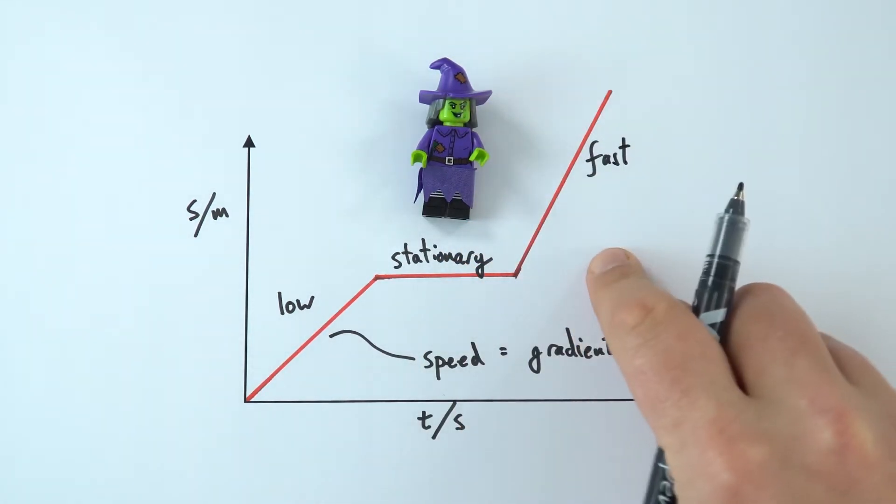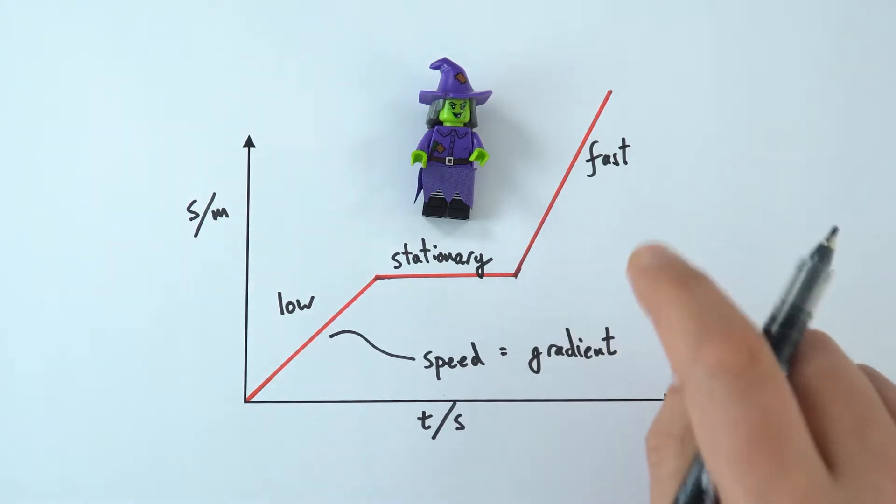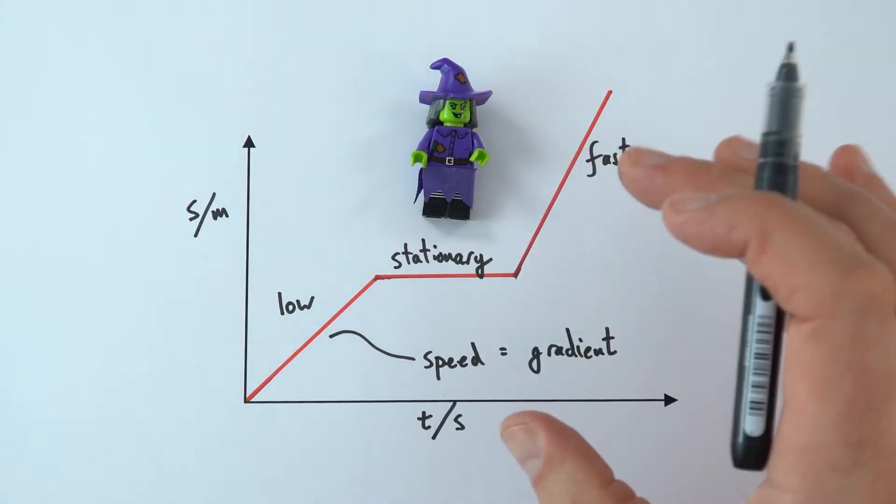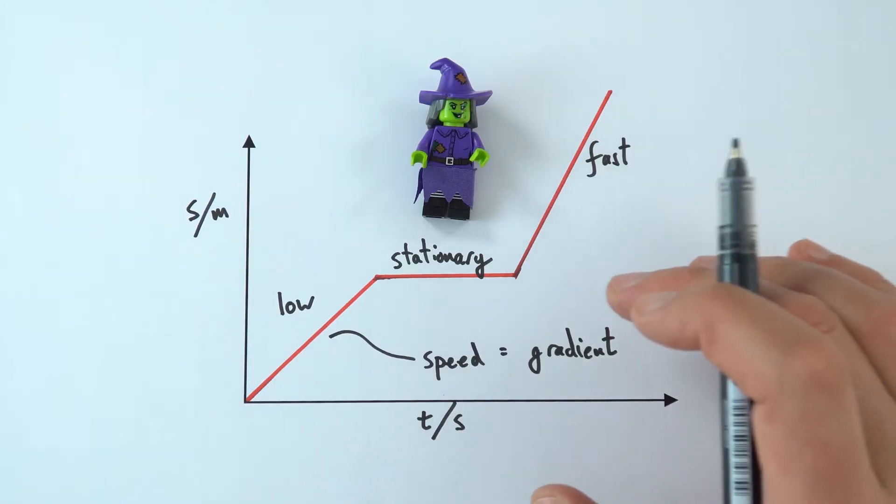And when you have a straight line on the graph, that means they're going at a constant speed or a constant velocity. So this distance time graph is a really useful way of visualising the motion of an object.